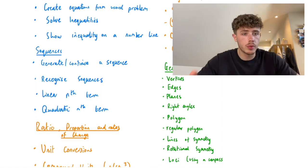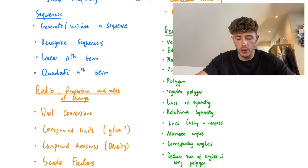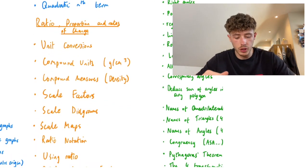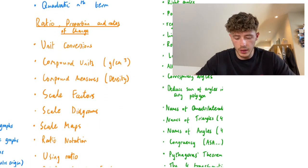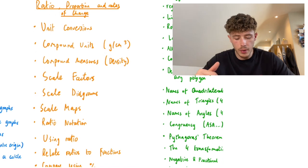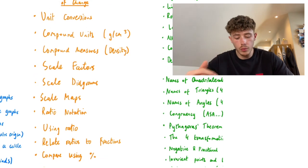Finally, orange is ratio, proportion and rates of change, topic number three. Unit conversions, so converting between metres, kilometres, stuff like that. Compound units, compound measures, scale factors, scale diagrams, scale maps, and ratio notation.